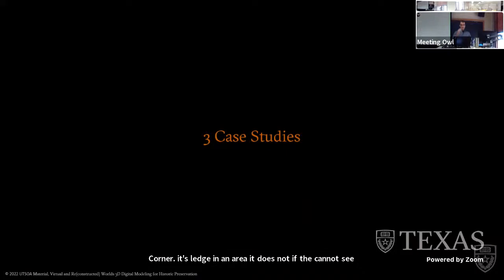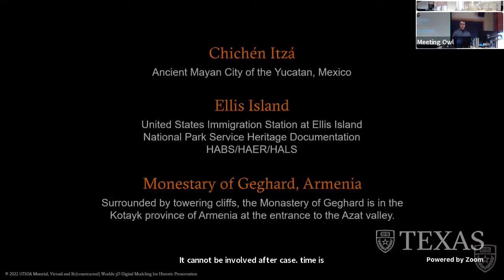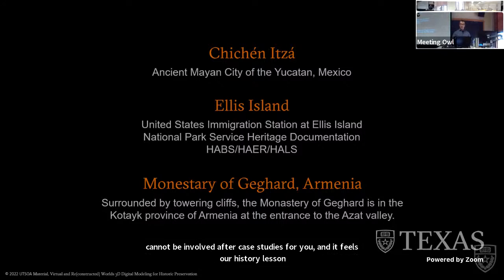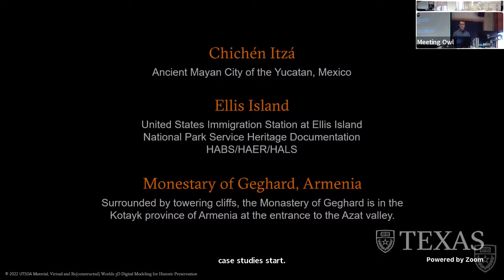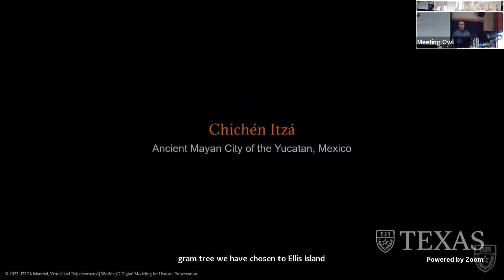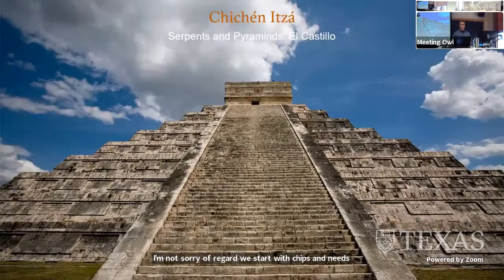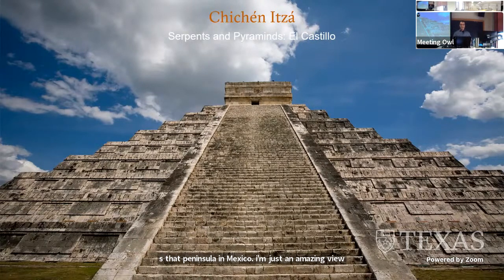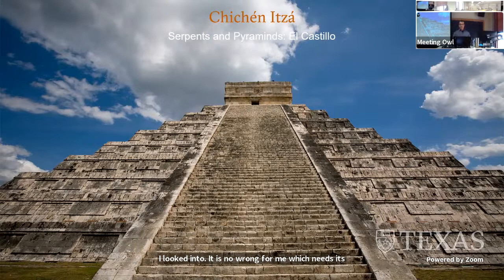Three case studies take advantage of both LIDAR and photogrammetry: Chichen Itza, Ellis Island, and the Monastery of Geghard. Starting with Chichen Itza in Mexico — UAV flights here are only allowed with a special permit. One of Chichen Itza's most conspicuous structures is a massive nine-level pyramid, 90 feet high by 180 feet wide, in the center of a large plaza named El Castillo, or the Castle. At the spring and fall equinoxes, the setting sun casts undulating shadows forming serpent bodies on the north stairway, pointing toward the sacred cenote.